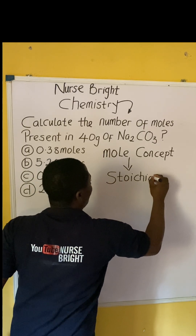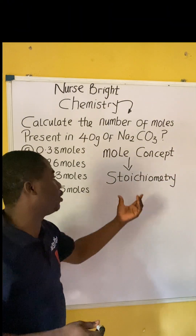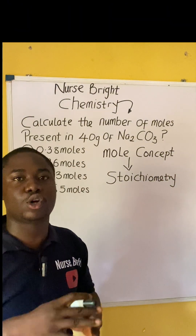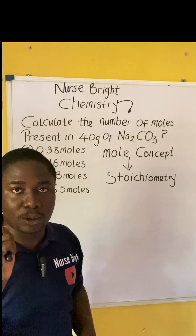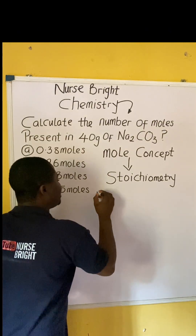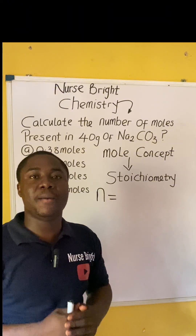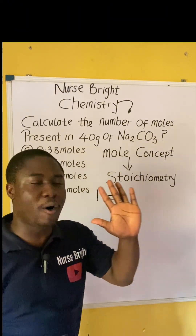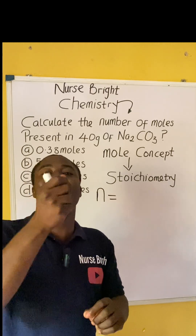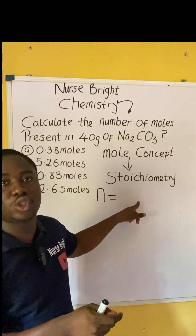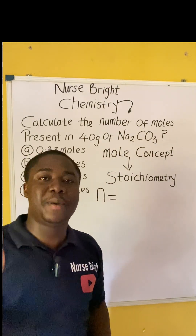Mole concept is basically the foundational aspect under stoichiometry, and they are asking us to calculate the number of moles. Number of moles is symbolized as N, and we have about five basic formulas for number of moles.